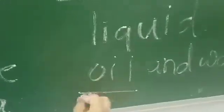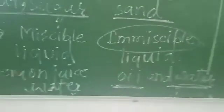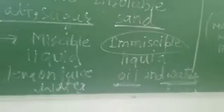An immiscible liquid is one which does not dissolve in water. For example, oil and water — oil is insoluble in water and is an immiscible liquid.